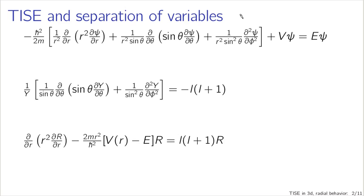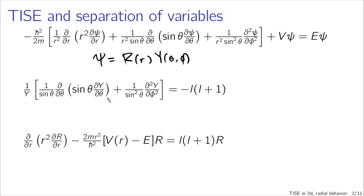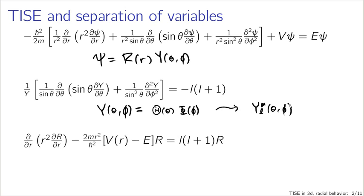We're working through separation of variables in spherical coordinates for the time-independent Schrödinger equation in three dimensions. If we make the substitution that psi equals R, some unknown function of r, times Y, some function of theta and phi, we get two main pieces. The separation constant we call the energy, and we also get the angular part. Applying separation of variables again to Y(theta, phi) as capital Theta(theta) times capital Phi(phi) gave rise to our Y_lm(theta, phi), our spherical harmonics.